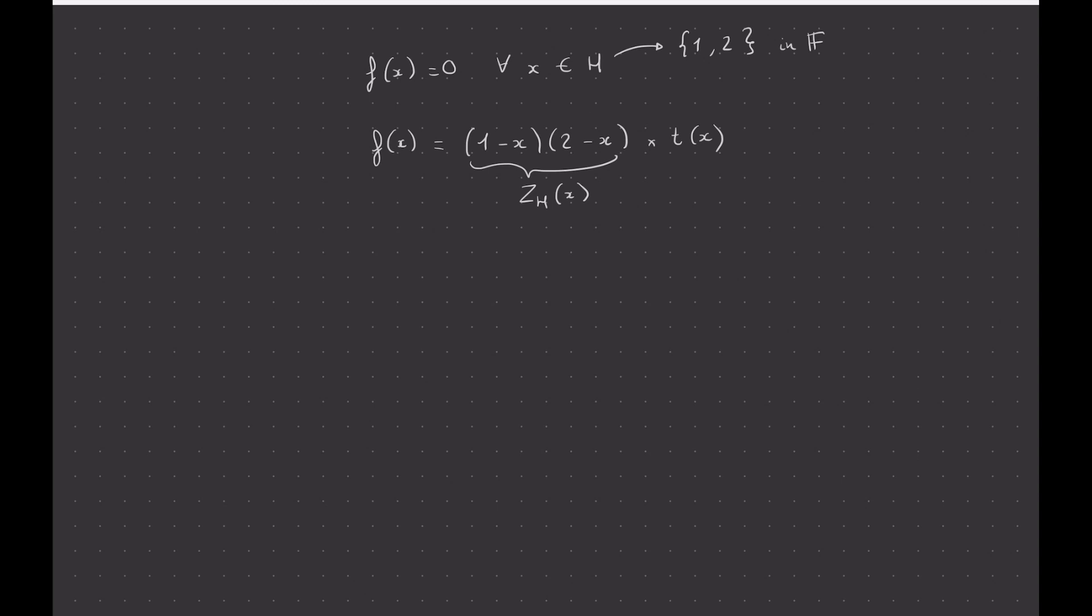Times some quotient polynomial that we can calculate. As the prover, we can calculate that by just dividing f by this vanishing polynomial, and then we get this.